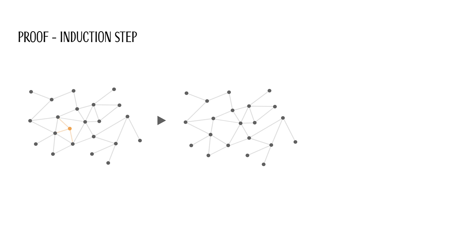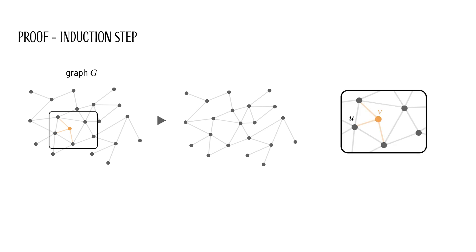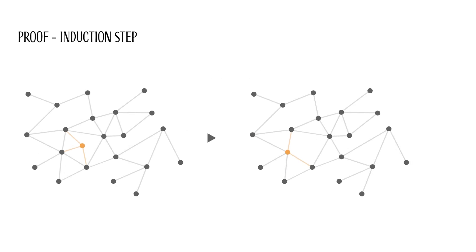Edge contraction means that two adjacent vertices merge into one. Consider two vertices U and V in the example graph G. The two vertices are connected by an edge U, V. If we now contract the edge U, V, the vertices U and V merge into a new vertex X. All vertices that were previously connected to U or V are now connected to the new vertex. All other edges in the graph remain unchanged. We call the newly formed graph G/U,V. In Menger's theorem, we consider a graph with two vertex sets A and B. When contracting edges, we must carefully track what happens to our sets A and B. If U or V or both belong to A, then we define the new vertex X as part of A as well. Similarly, the new vertex X belongs to B if U or V or both were originally in B.